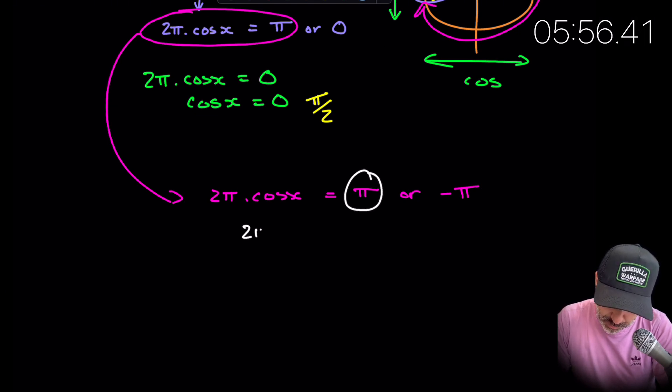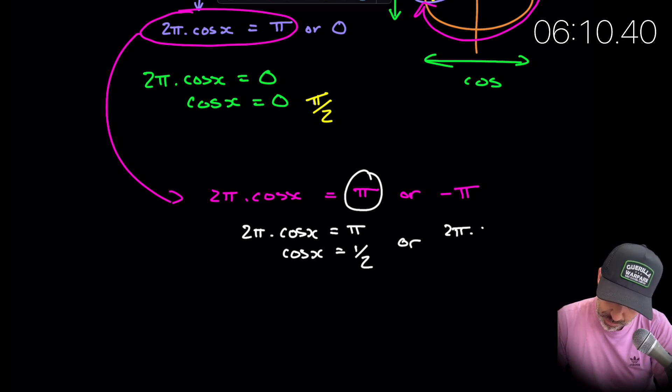So therefore then, let's just deal with π to begin with. Okay. So therefore 2π times cos x is equal to π. So cos x is equal to π over 2π. So that's going to be a half. And we do exactly the same again. 2π cos x has to equal minus π. So therefore cos x has to equal minus half.